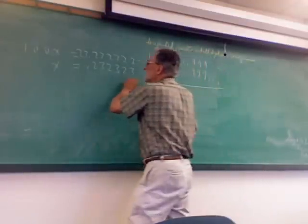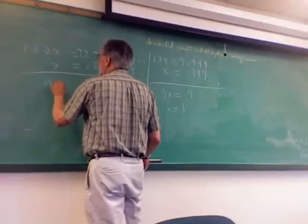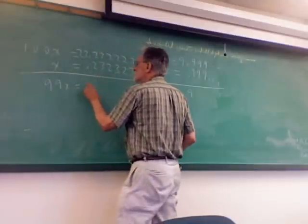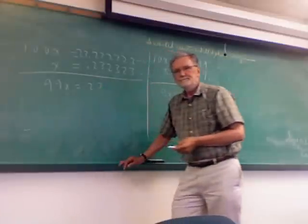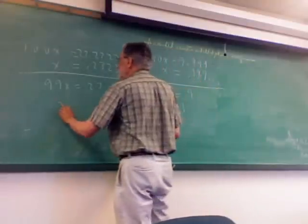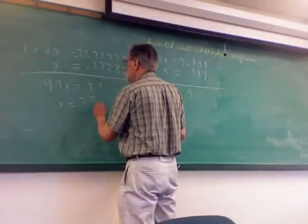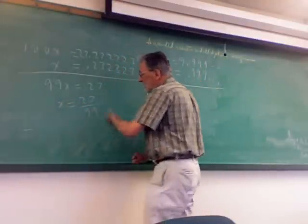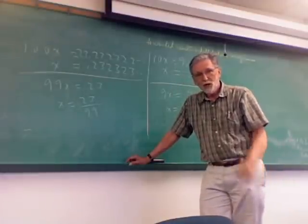Now when I subtract, I'm going to get 99X equals 23. So X is going to be 23 over 99. Told you it was a fraction.